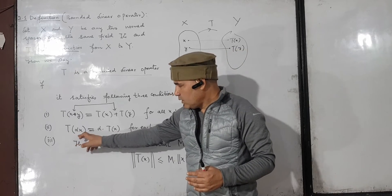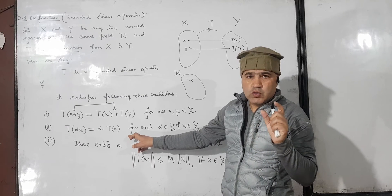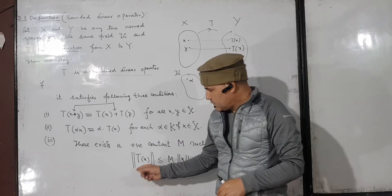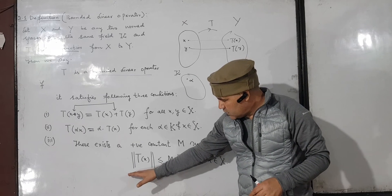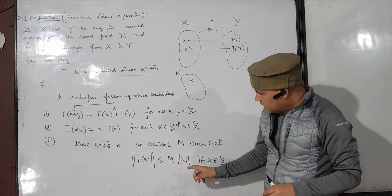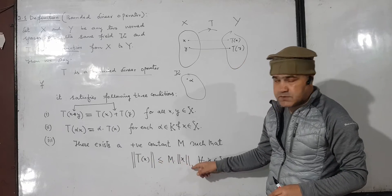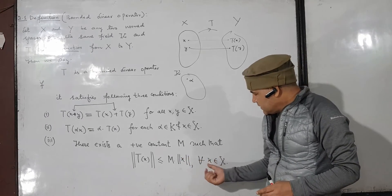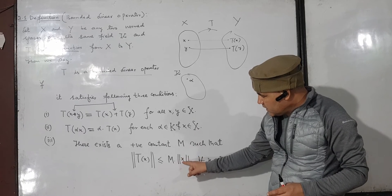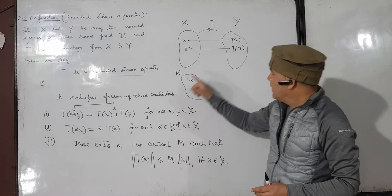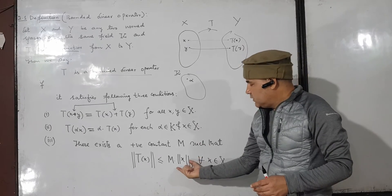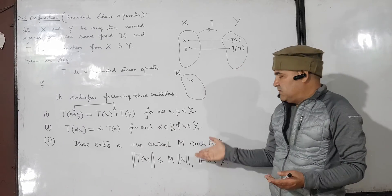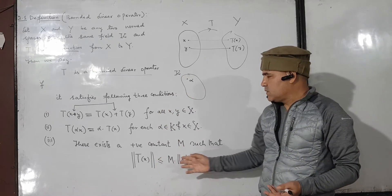The same remarks hold for the second condition — that is an exercise for you. Now regarding the third condition, the norm symbol on the left and the norm symbol on the right look similar but are quite different. The left norm acts on an element of X, so it is the norm associated with X, while the right norm acts on an element of Y, so it is the norm associated with Y. If X and Y are different, the norms are different; if they happen to be the same, the norms are the same.